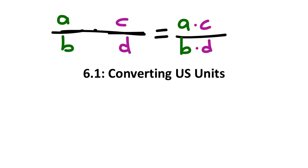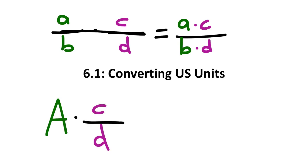Sometimes we'll see fraction multiplication with a whole number. If we have a whole number multiplied by a fraction, we need to remember that the whole number is just a over one, which is still fraction multiplication. So if you see a whole number multiplied by a fraction, it's still the same thing.